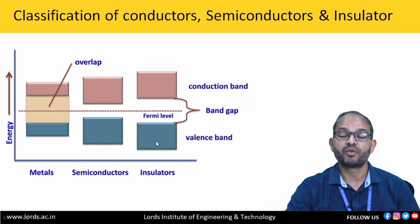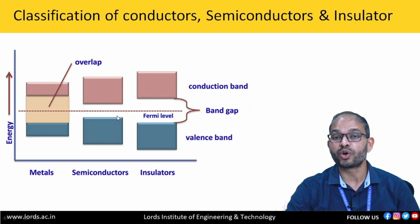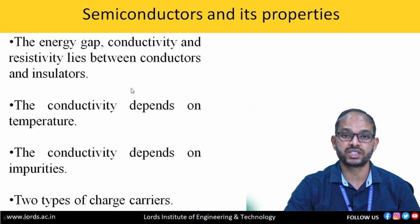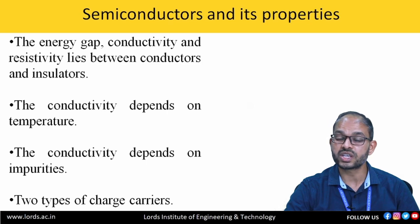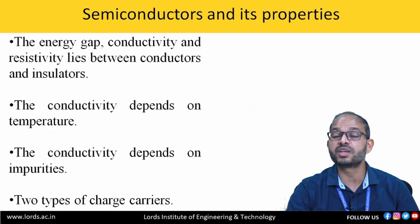For insulating materials, the valence band and conduction band are separated with a huge energy difference; they do not conduct electricity — we call them non-conductors or insulators. Materials whose energy band structure is separated with a moderate energy difference are neither conductors nor insulators — we call these semiconductors. Semiconductors have an energy gap between that of conductors and insulators. Apart from that, the conductivity of semiconductors depends on temperature and also on impurities, and they have electrons and holes as charge carriers. The conductivity increases with temperature and also increases with impurities — this is the beauty of semiconductors.